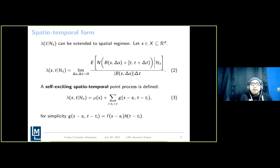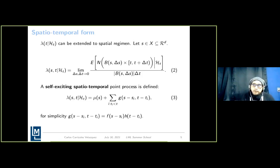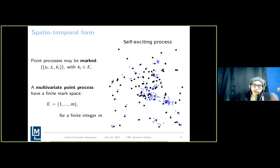We can also extend the temporal process to include spatial characteristics. In this case, we have the expected number of events in a temporal and spatial interval, given a certain history. For the spatiotemporal case, the trigger function depends on spatial and temporal coordinates. For simplicity, it is recommended to split this function as a separable function in space and time.